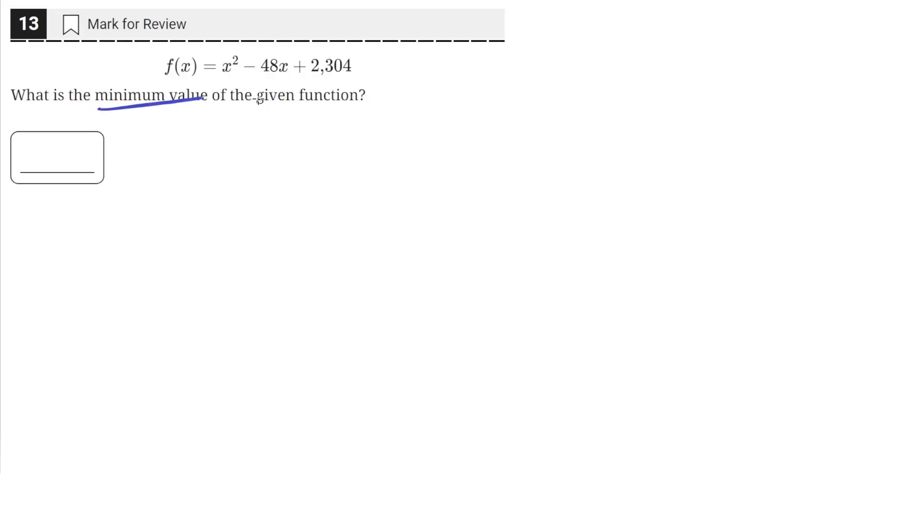What is the minimum value of the given function? We have this quadratic here. You can tell that it's upward facing since the coefficient of the second degree term is positive, so the minimum value is going to be at the vertex.